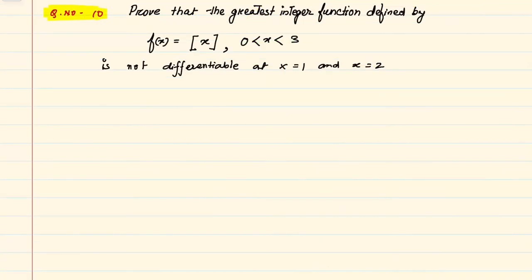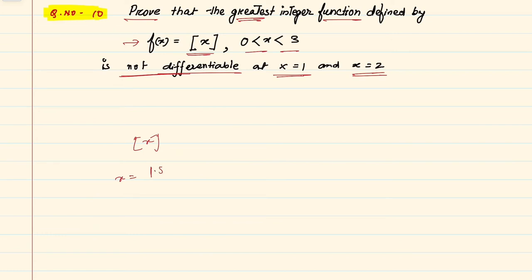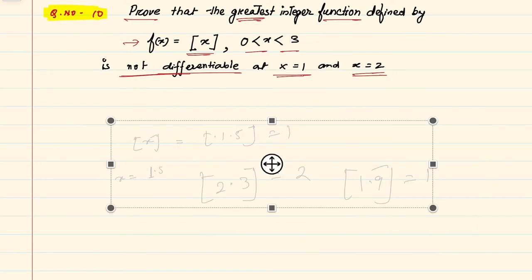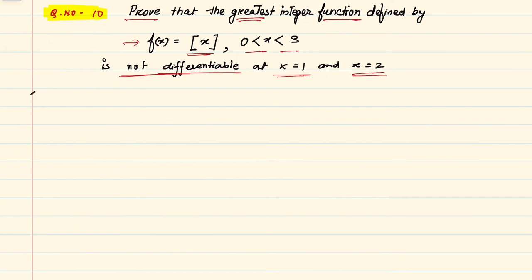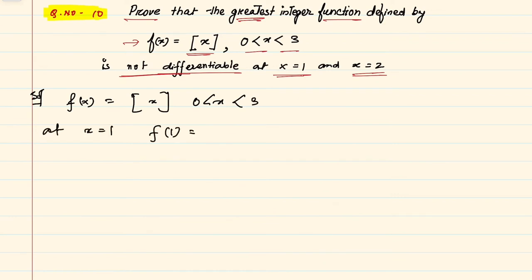Now question number 10: Prove that the greatest integer function f(x) = ⌊x⌋, where 0 < x < 3, is not differentiable at x = 1 and x = 2. The greatest integer function gives the largest integer less than or equal to x; for example, ⌊1.5⌋ = 1 and ⌊2.3⌋ = 2. At x = 1, f(1) = 1.